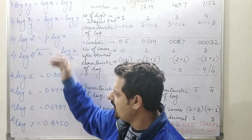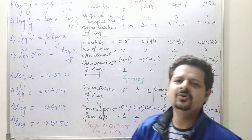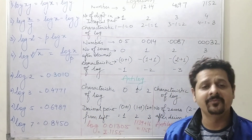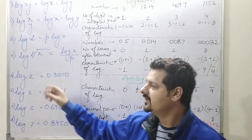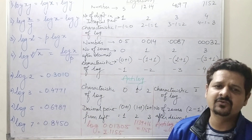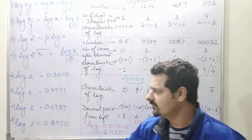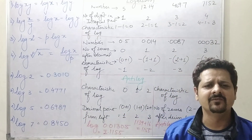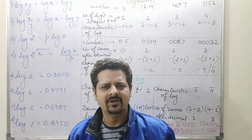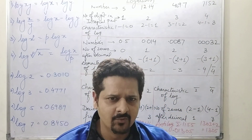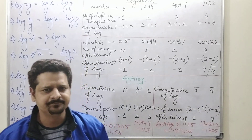You also need to memorize some values: log 2 = 0.3010 and log 3 = 0.4771, so that you don't waste time calculating and going for the log table.